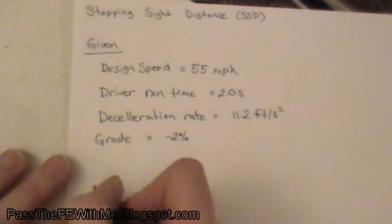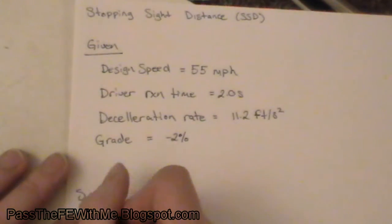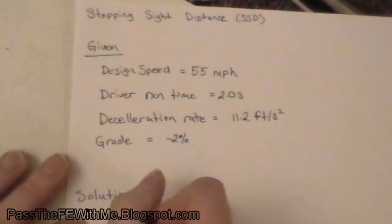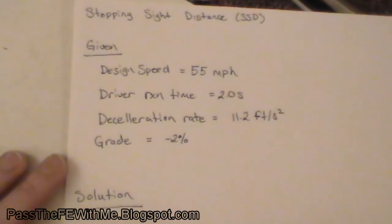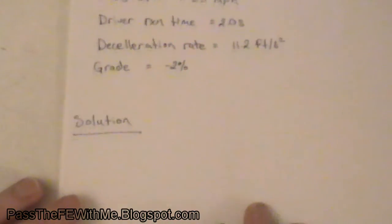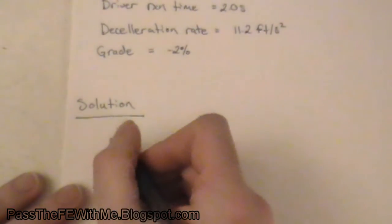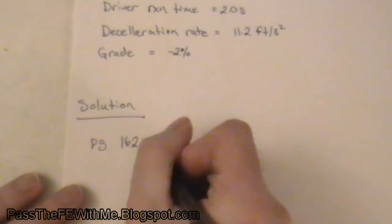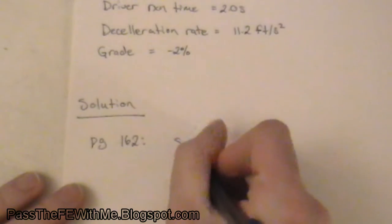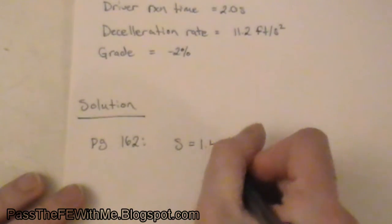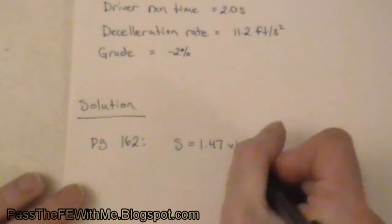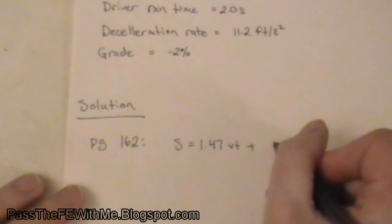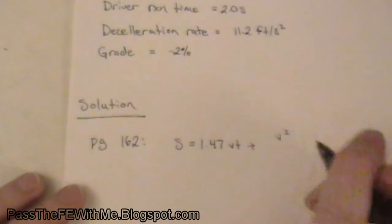Okay, so for our solution, first we're just going to pull open that part of the manual and write this equation from page 162 down. You can see, this equation is broken into two parts.